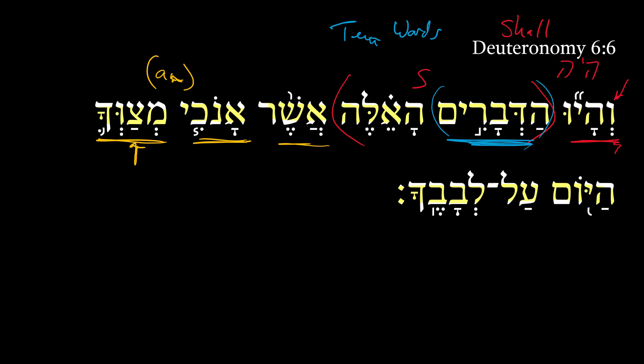Here we have a Piel participle — it's a masculine singular participle with a 2MS suffix on it — 'which I am commanding you.' The root is tsav-vav-he. Notice the third he is gone, but the vav in the middle is stable because of the dagesh of the Piel. So Piel participle: 'which I am commanding you.'